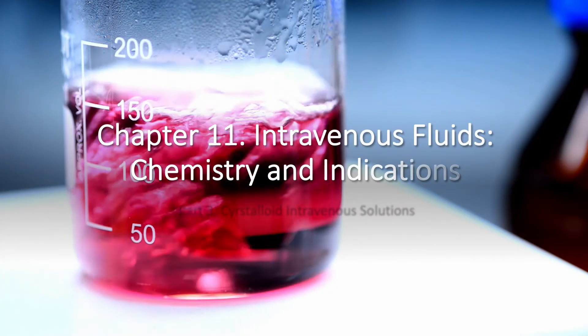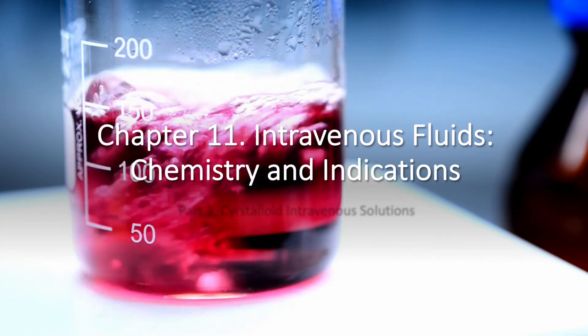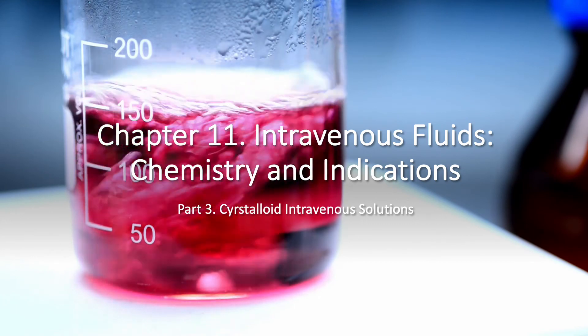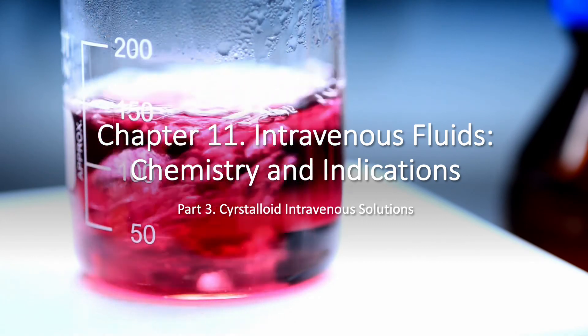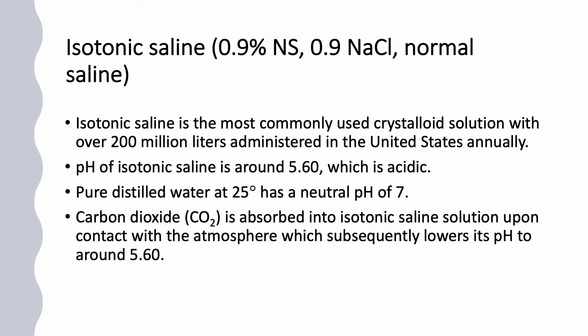Today we are still on chapter 11, intravenous fluids: chemistry and indications, and this is part 3. We're going to talk about crystalloid intravenous solutions. In the previous lecture, we talked about D5W — 5% dextrose in water. Today we are going to discuss isotonic saline, half-normal saline, lactated Ringer's, and balanced electrolyte solutions.